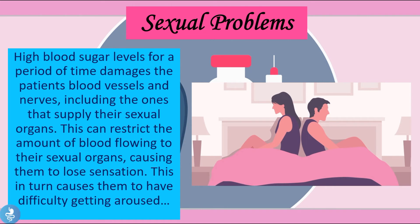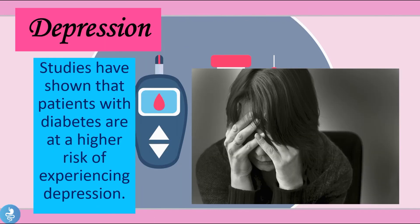Another complication is sexual problems. High blood sugar levels over time damage the patient's blood vessels and nerves, including the ones that supply their sexual organs. This can restrict blood flow and cause loss of sensation, making it difficult to become aroused. Studies have also shown that patients with diabetes are at a higher risk of experiencing depression.